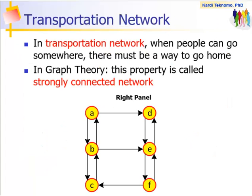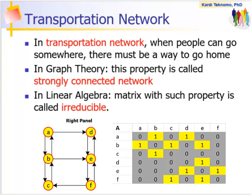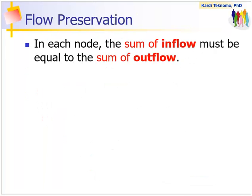In graph theory, a network with the property that you can go out from any home node to somewhere and still be able to go home is called strongly connected network. We can put the network into matrix. In linear algebra, a matrix with this property is called irreducible. Another concept that becomes the basis of IFN is flow preservation in all nodes in the network.